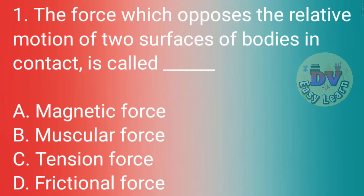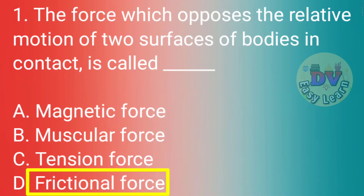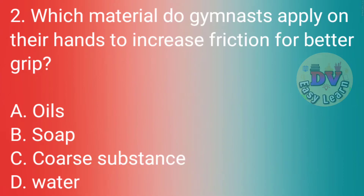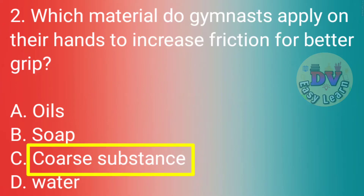Q1. The force which opposes the relative motion of two surfaces of bodies in contact is called? Correct answer: Coarse substance.